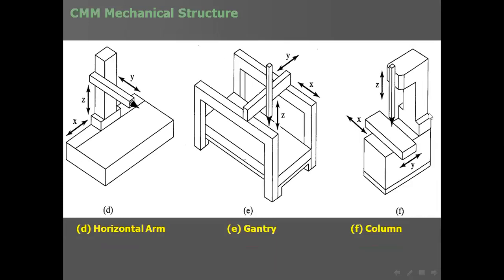Other configurations include the horizontal arm type — Z in one direction, X in another, and Y laterally — and the gantry type, similar to an overhead trolley in factories. The column type is similar to a drilling machine: X and Y motion is achieved by the work table, and Z is provided by the vertical arm moving up and down.